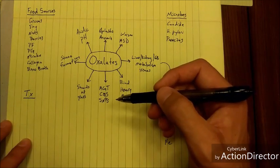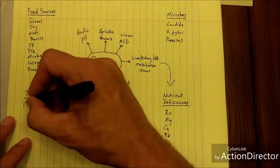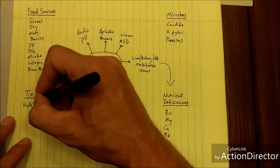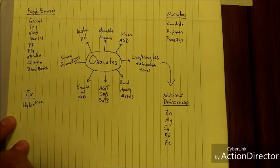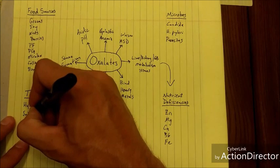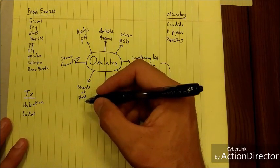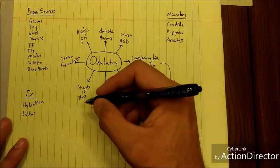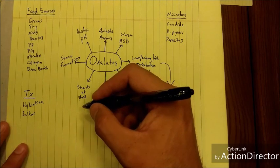How do we treat oxalate overload? Well, one thing that is going to be very key is good hydration. Hydration is key. Another thing that is key is good sulfur levels. Sulfur opposes oxalates one-to-one. So if you can increase your sulfur through, say, N-acetylcysteine or glutathione, that's a great way to oppose oxalates.